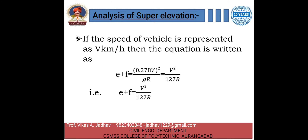If the speed of the vehicle is expressed as V in kilometers per hour, the equation becomes E + F = 0.278V² / gR = V² / 127R. Hence the final design equation is E + F = V² / 127R.